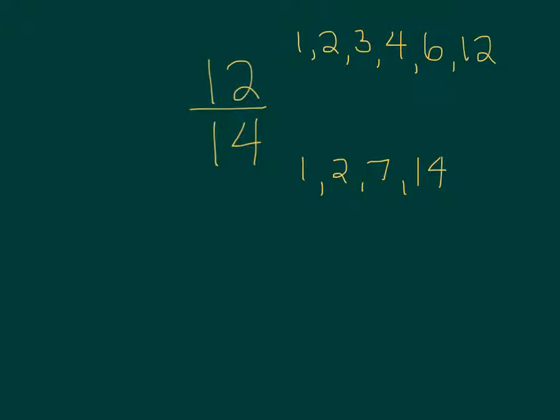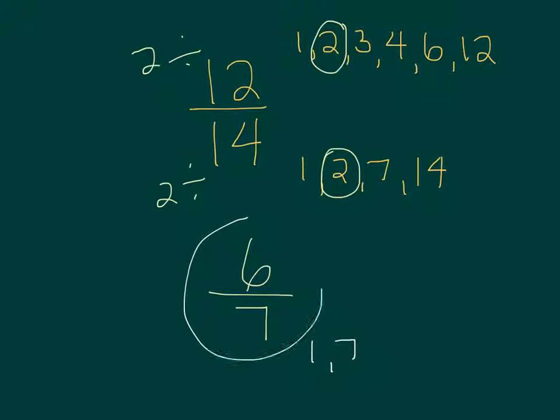You can see that both numbers have a 2, so that means that both numbers are divisible by 2. Now you would divide, and you would get 6 over 7. Then you must determine if those numbers are divisible by any number that they have in common. 7 is just 1 and 7, and we know that 6 is not divisible by either of those. So, we would say that 6 sevenths is a simplified form of 12 over 14.